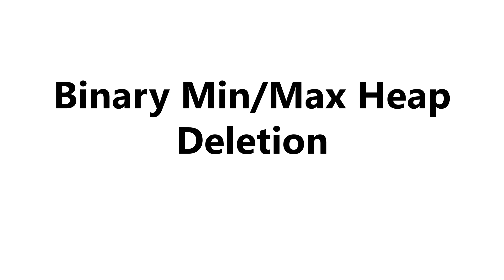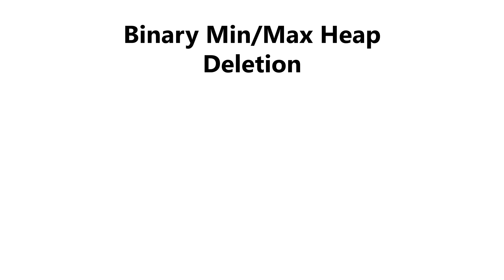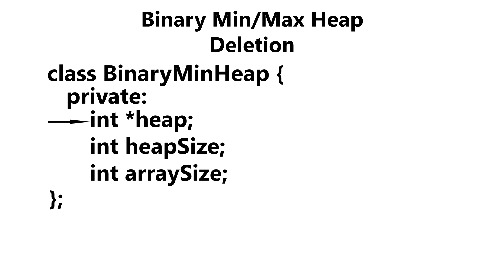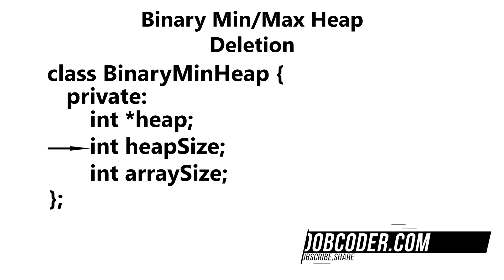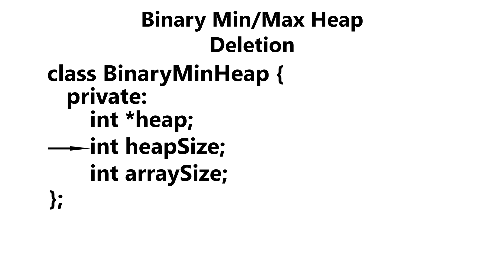We're going to start with our private data members. We have our heap, which is going to be the array we store our data in. Our heap size is going to be used to keep track of the number of elements within our array, to make sure we have enough space to insert, and to insert at the last available position. Our array size is obviously going to be the size of our array.